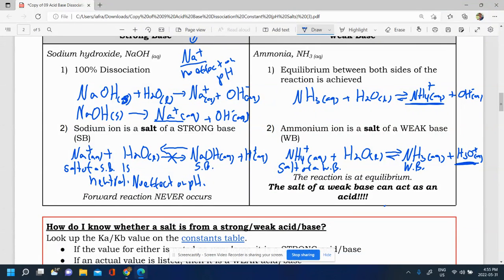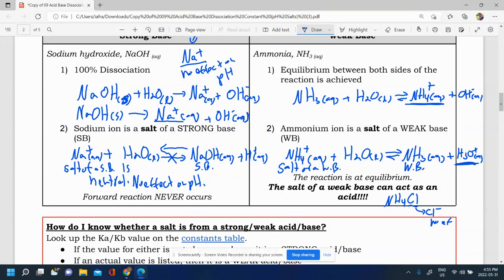So for example, if I had NH4 Cl, this Cl part is Cl minus. It comes from HCl. That's the salt of a strong acid. So no effect on pH. But here I have NH4 plus, this comes from a weak base, NH3. So this is the salt of a weak base. Therefore, it's a weak acid. So this salt would have a pH less than 7 since it's the salt of a weak base, which acts as a weak acid. And the Cl minus would not have an effect.